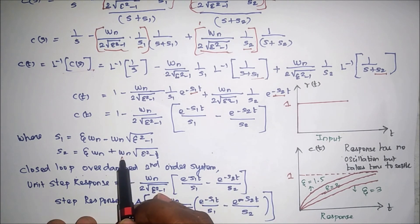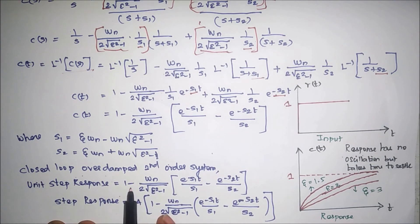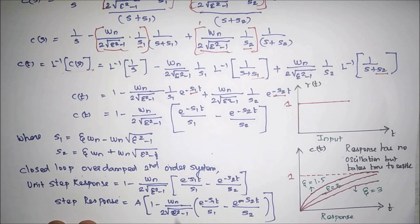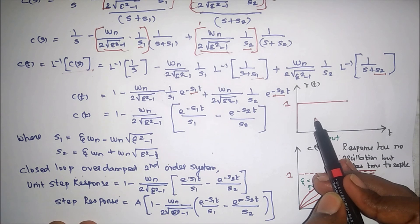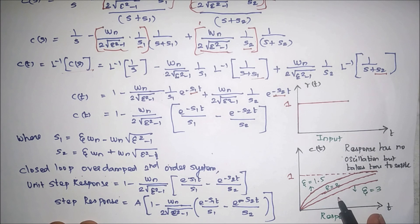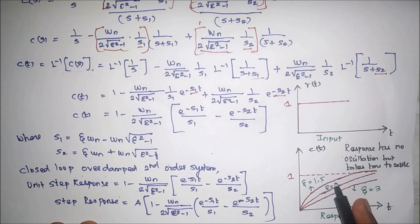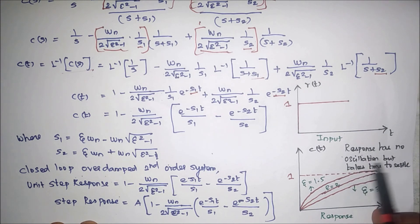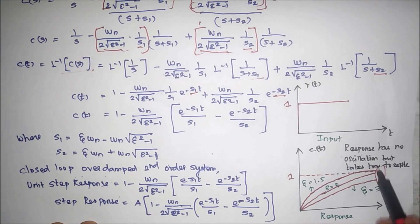The final closed loop overdamped second order system unit step response is obtained by multiplying the gain with this expression. For various values of eta greater than 1, substituting into this equation gives the response. From this response we can observe there is no oscillation, but the system takes time to settle. The settling behavior depends on the value of eta.